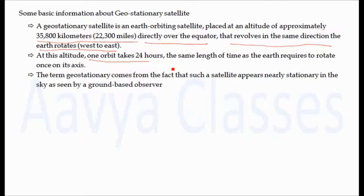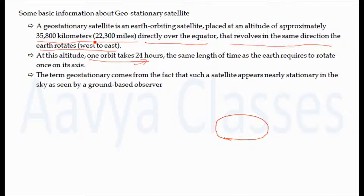The geostationary satellite revolves in the same direction that Earth rotates, which is west to east. The time taken by the geostationary satellite to complete one revolution equals the time taken by Earth to complete one rotation — 24 hours. Because of this, the geostationary satellite appears nearly stationary in the sky as seen by a ground-based observer. It is placed at 35,800 km or 22,300 miles directly over the equator, revolving west to east.